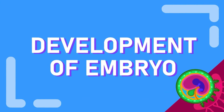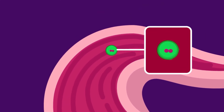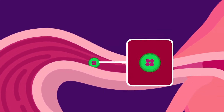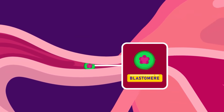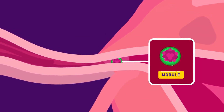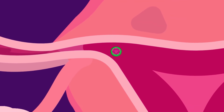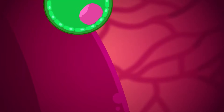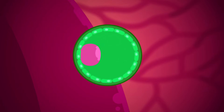The fertilized egg passes along the oviduct to the uterus. As it does, it begins to divide to form a hollow ball of cells called the embryo. It takes about five days for the embryo to reach the uterus. Finally, the embryo becomes embedded in the uterine lining. This is called implantation.